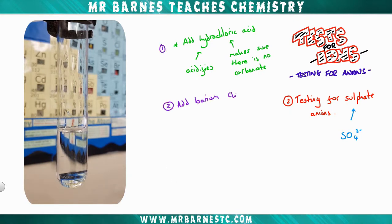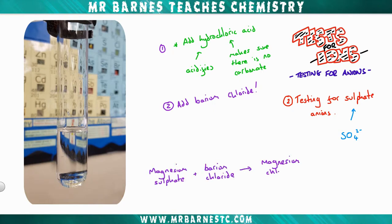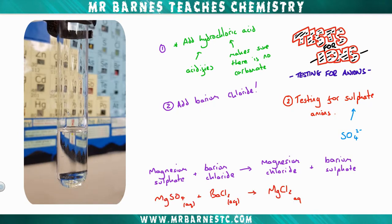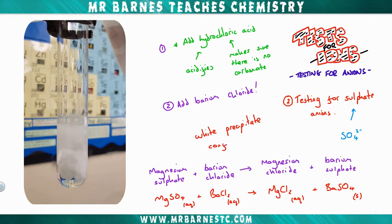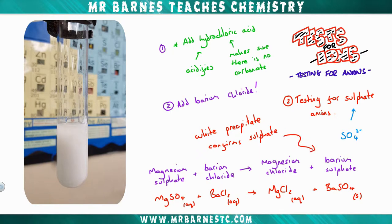As soon as we've done that, the next thing we do is take barium chloride and add it. By adding that it produces barium sulfate. So for example when I take magnesium sulfate and react it with barium chloride I get magnesium chloride and barium sulfate. If you get barium sulfate you get a white precipitate, and that confirms that your sulfate is present.